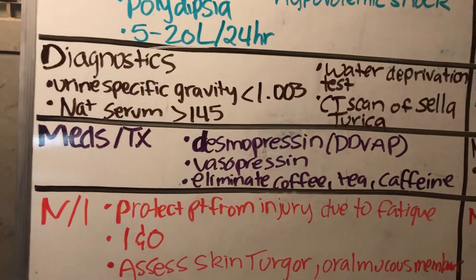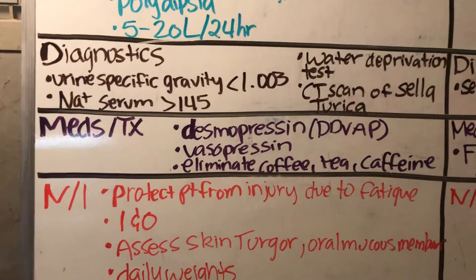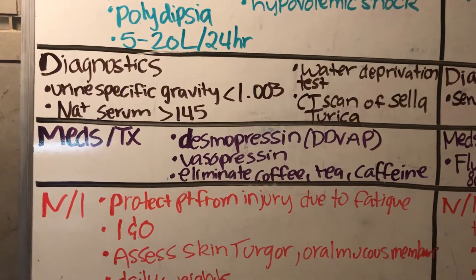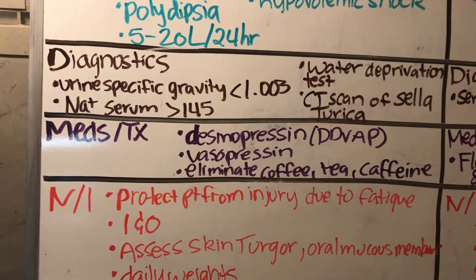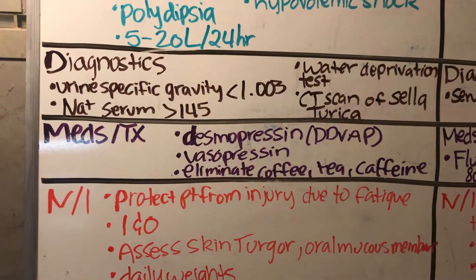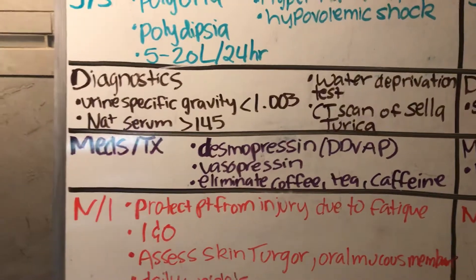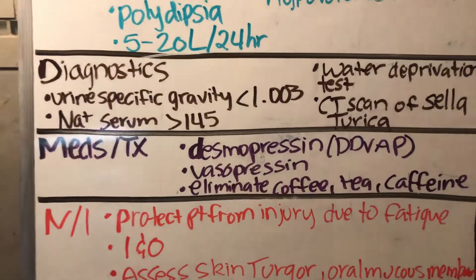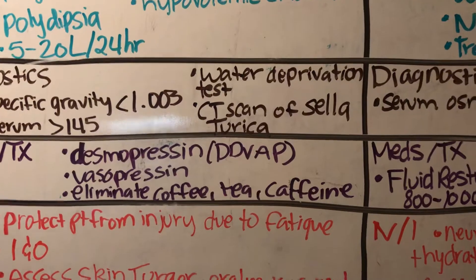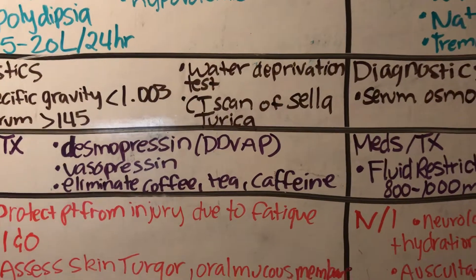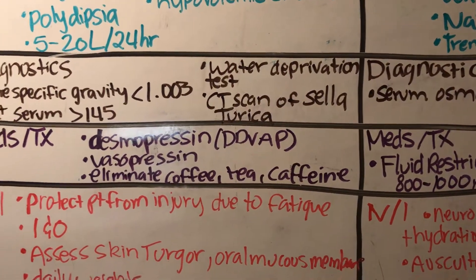For diagnostics, the urine specific gravity test is done. Usually their levels show less than 1.003. Their sodium serum levels are greater than 145 — the normal range is 135 to 145. The water deprivation test is done, and also a CT scan of the sella turcica.